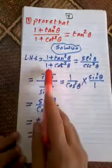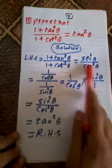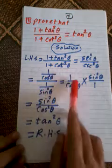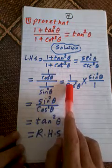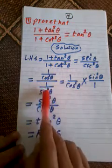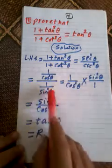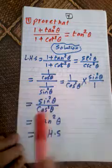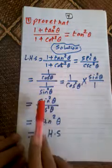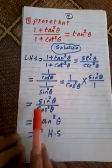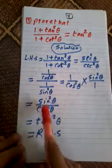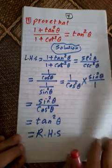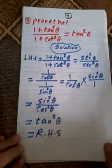So secant squared theta equals one over cosine squared theta, and cosecant squared theta equals one over sine squared theta. Dividing these two fractions: take the first fraction and multiply by the reciprocal of the second, giving one over cosine squared theta times sine squared theta over one. This equals sine squared theta over cosine squared theta, which equals tan squared theta. This equals the right hand side.